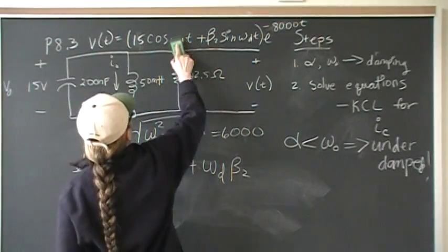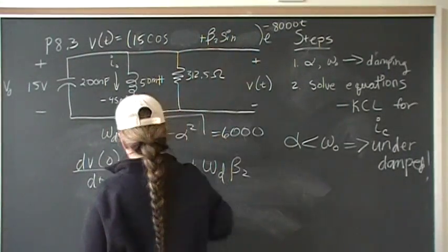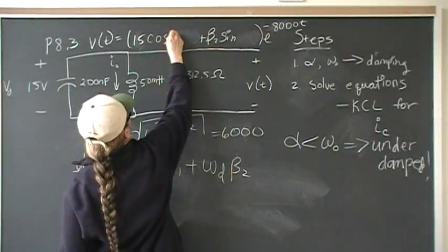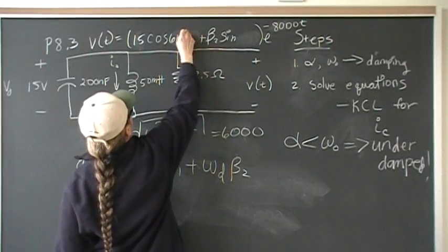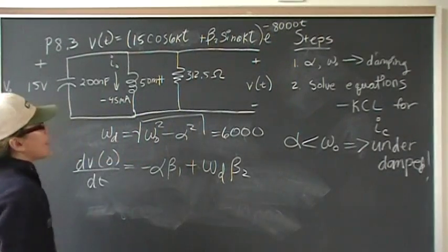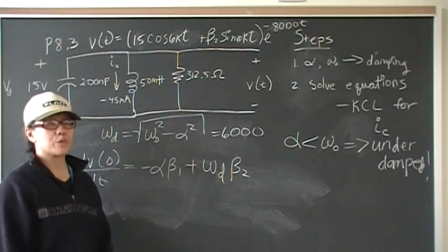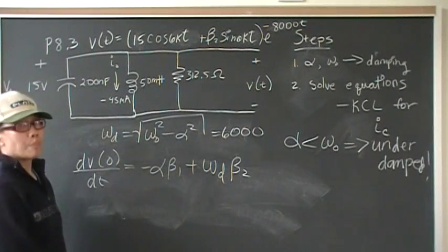Okay, so there, 6,000 T. So now all that's left is beta 2. We've found 90% of the problem already. Piece of cake.